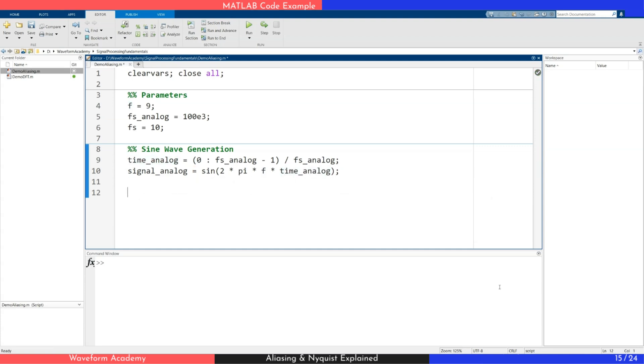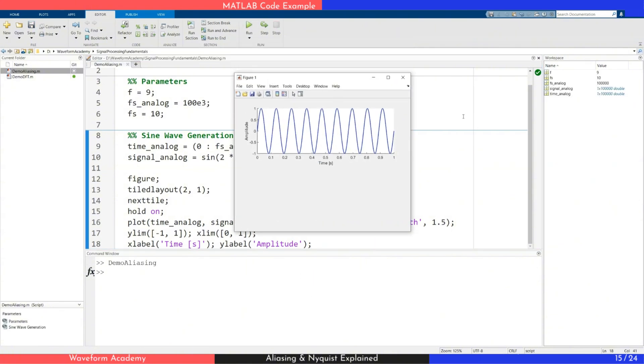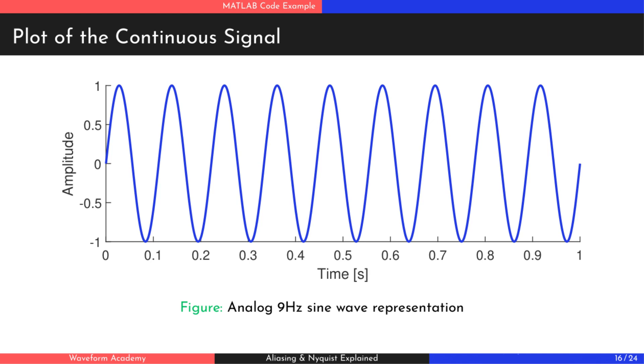Finally, we plot the signal. As you can see, the 9 Hz continuous sine wave is now displayed.